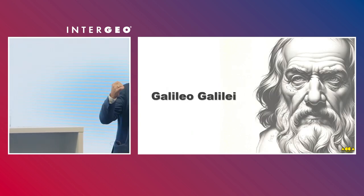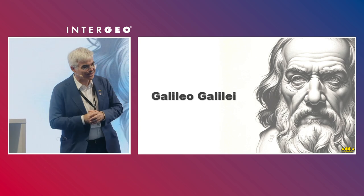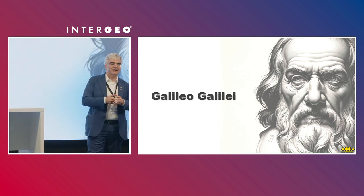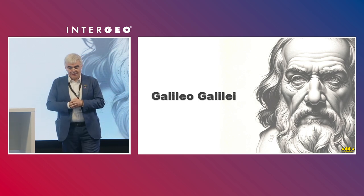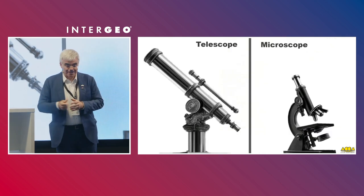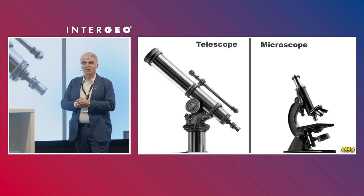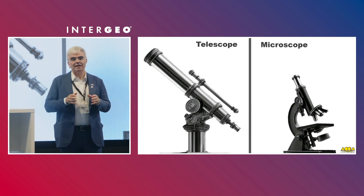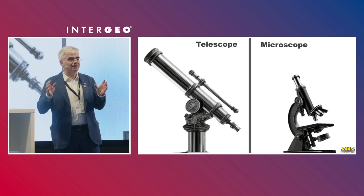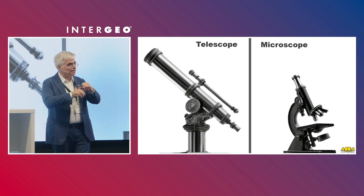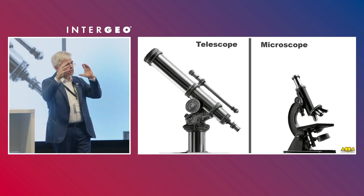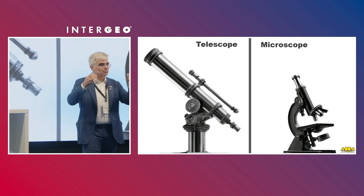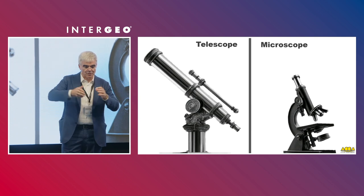I have with me Galileo Galilei. Why is Galilei here with us this afternoon? Galileo was the first in the history of science to point an optical instrument at the sky to analyze phenomena that were very far from us.